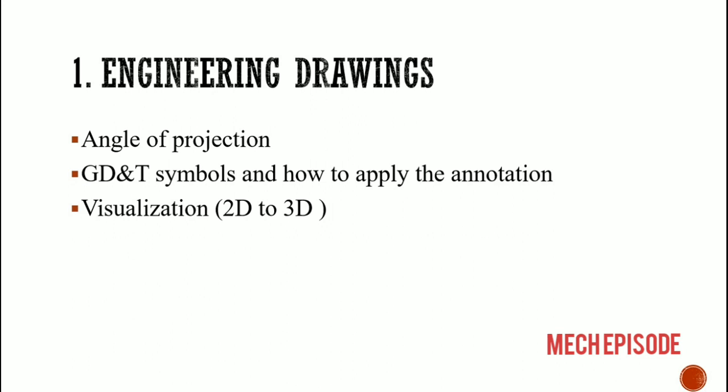Next is GD&T symbols. GD&T symbols are classified as form control, profile control, orientation, location, and runout. And next is how to convert 2D into 3D.